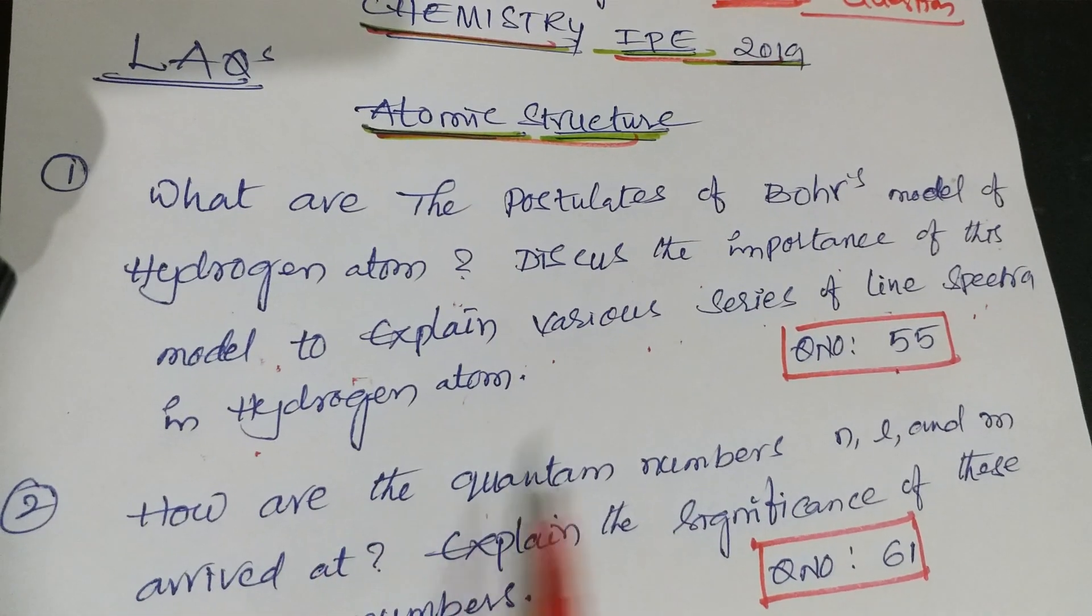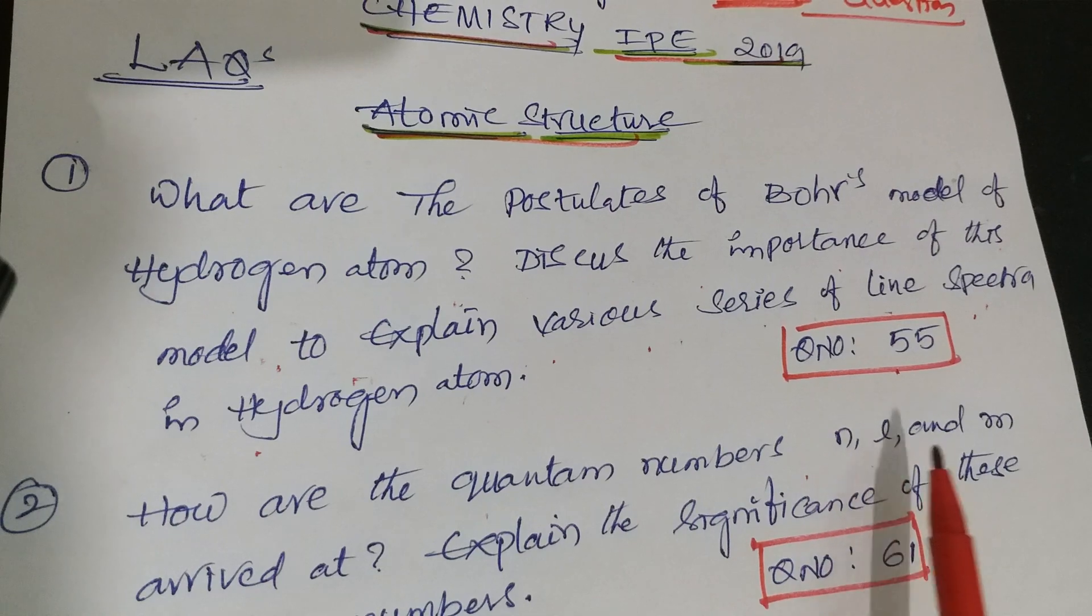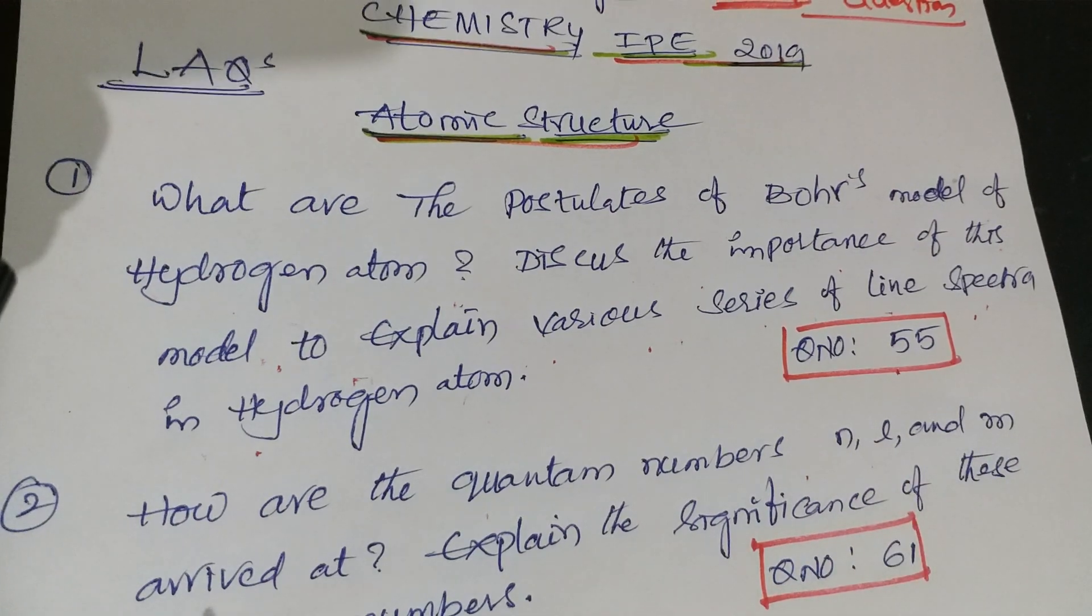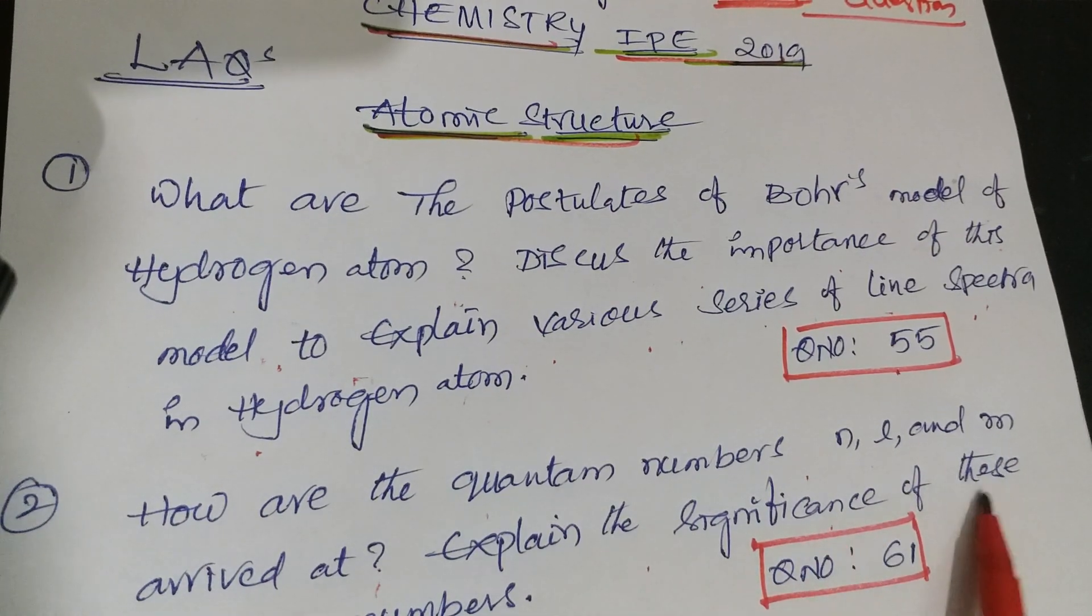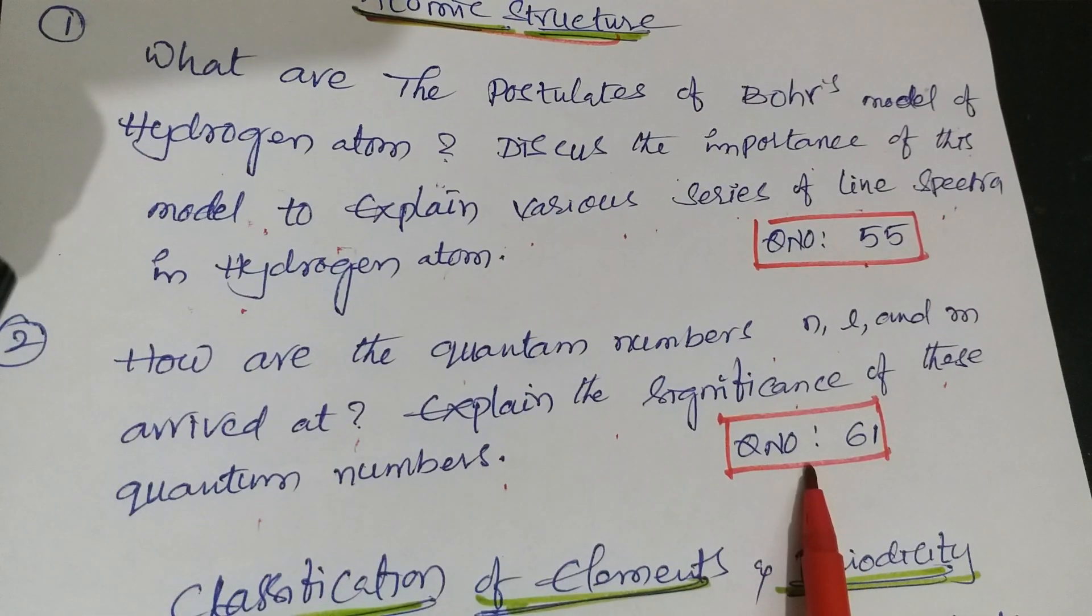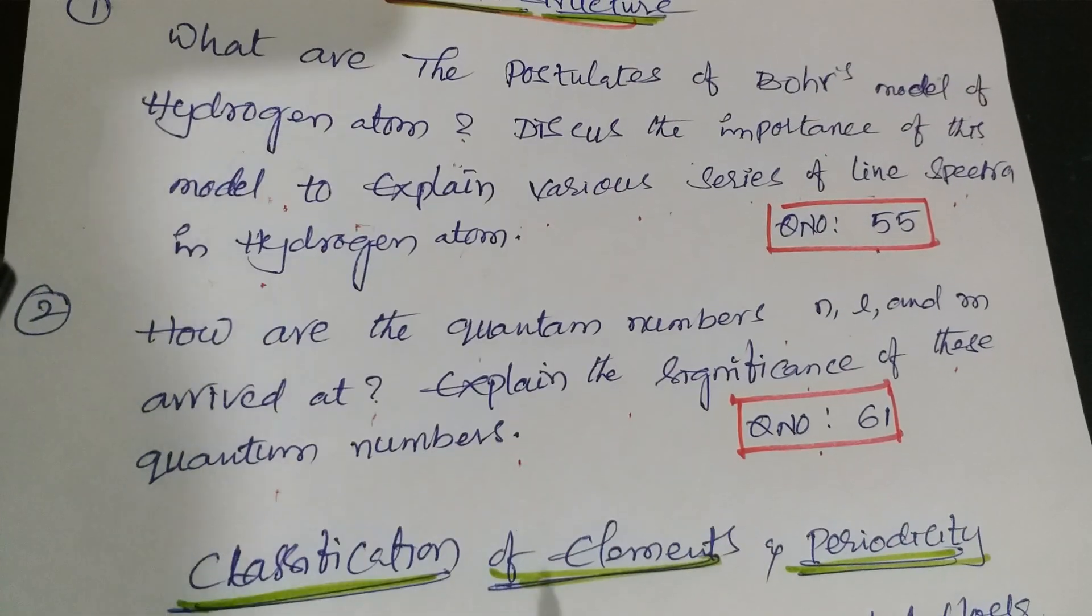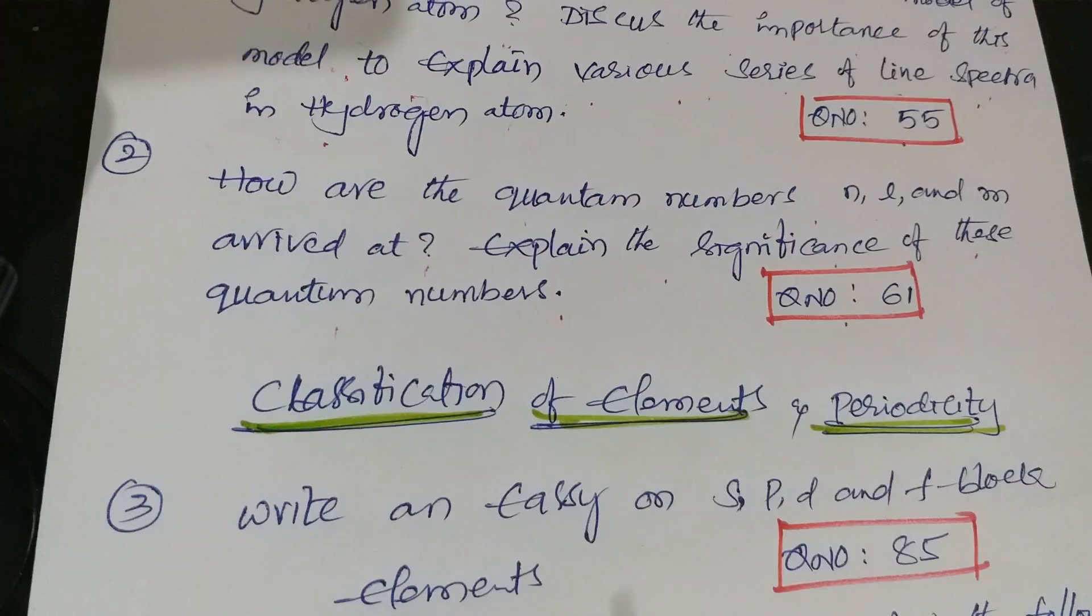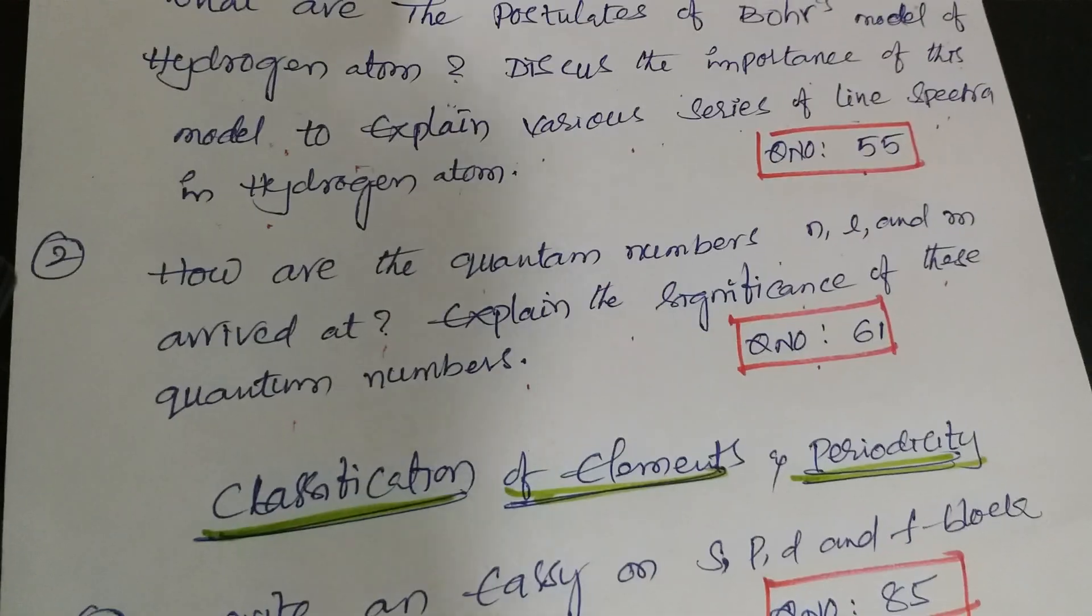Second question about the quantum numbers N, L, and M. Explain the significance of these quantum numbers. It is question number 61 from Telangana Academy textbook and from other materials also. These two questions are important from atomic structure.